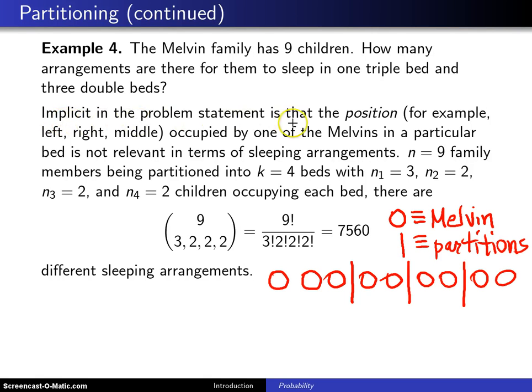Implicit in the problem statement here is that the position, for example left, right, or middle in this triple bed occupied by the Melvins, is not relevant in terms of the sleeping arrangements. It turns out n is equal to nine, that's the number of Melvin children.